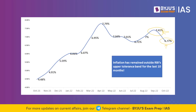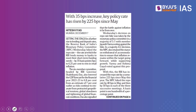Since inflation is not within the bracket — which should be 4 percent, with an upper limit of 6 and a lower limit of 2 — and it has exceeded 6 percent, the RBI will have to regulate inflation. The Reserve Bank of India has announced a 35 basis point hike in the repo rate, which is the fifth rate hike since May 2022, taking the total quantum of rate hikes to 225 basis points.